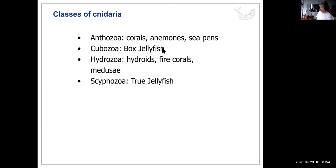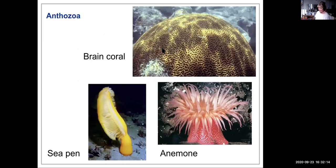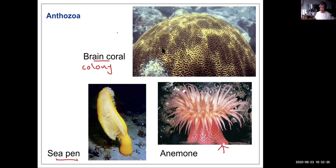There are various classes of Cnidaria. Anthozoa include corals, anemones, and sea pens. Cubozoa include box jellyfish. Hydrozoa include hydroids and fire corals. Scyphozoa are the true jellyfish. Corals are all colonies of polyps; brain coral is a colony, sea pens are colonies, and a single anemone is one large polyp.